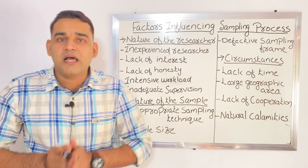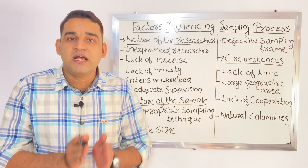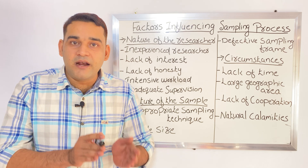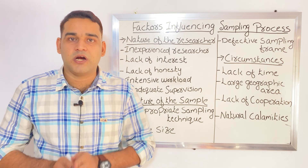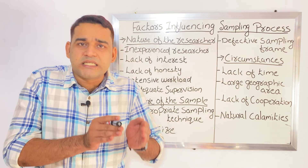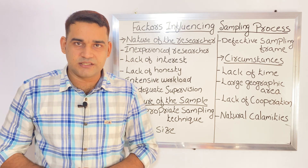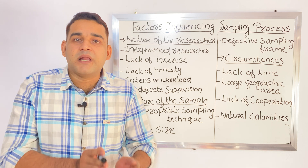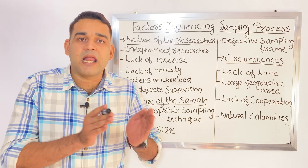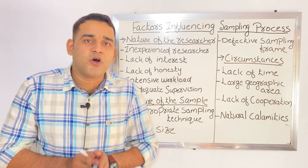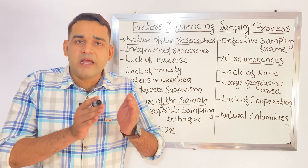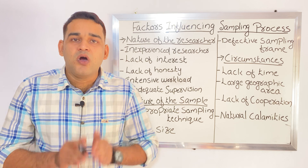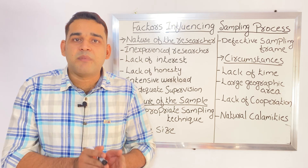Last one is natural calamities — that means natural disasters while conducting the research. Sometimes a flood, earthquake, or any environmental disaster like a cyclone has occurred. That is also going to affect the sampling process. Disasters occurring in the environment like flood, earthquake, or cyclone are also going to affect the sampling process.